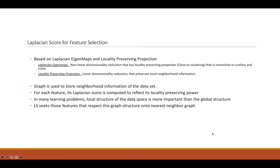Laplacian score for feature selection is based on Laplacian eigenmaps and locality-preserving projection. Laplacian eigenmaps is non-linear dimensionality reduction that has locality-preserving properties that is insensitive to outliers and noise. Locality-preserving projection is linear dimensionality reduction that preserves local neighborhood information. In many learning problems, local structure of the data space is more important than the global structure. Laplacian score seeks those features that respect this graph structure onto the nearest neighborhood graph.